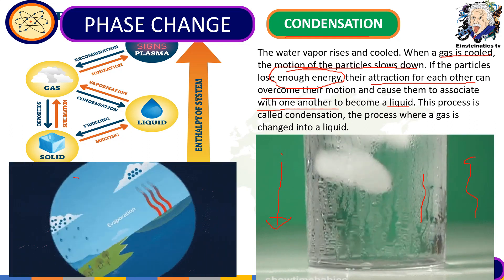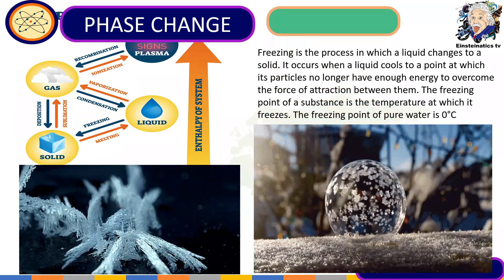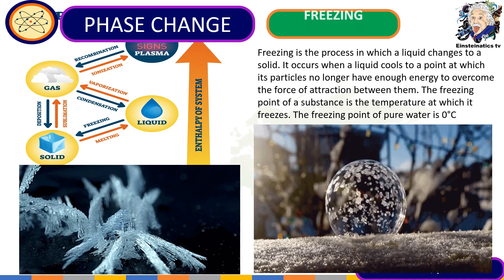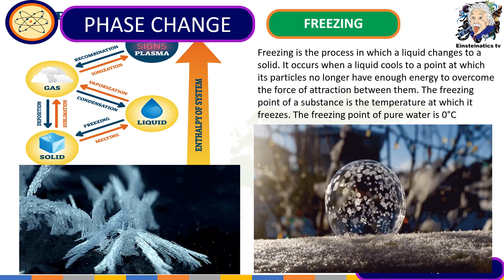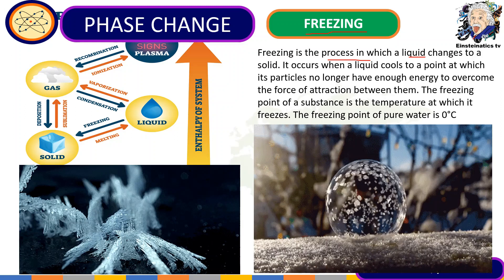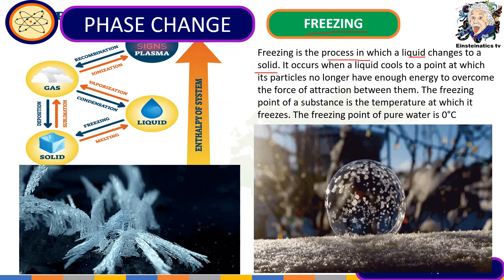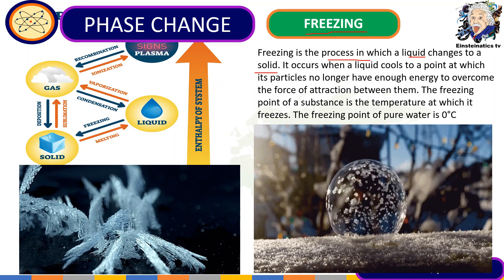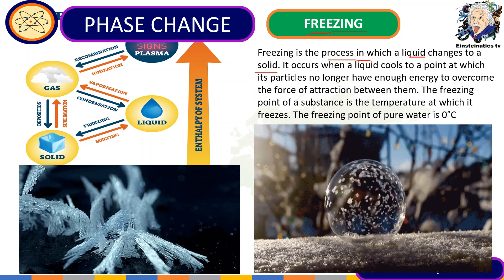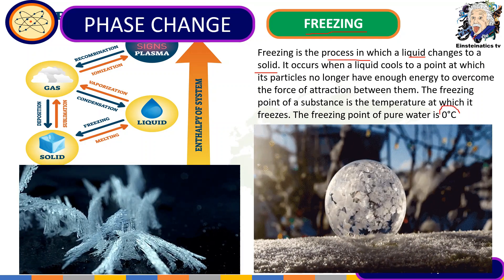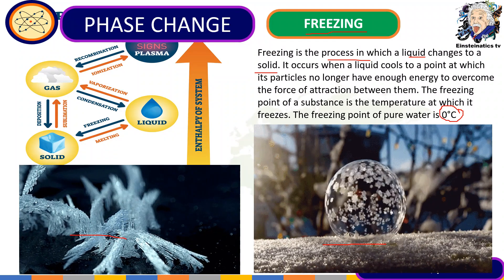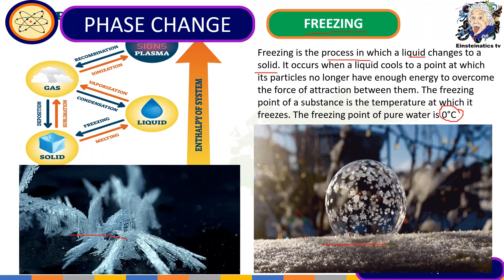Condensation is also the reason why we have rain. The next physical change is freezing — the process where liquid changes into a solid. It occurs when a liquid cools to a point at which its particles no longer have enough energy to overcome the force of attraction between them. The freezing point of pure water is zero degrees Celsius, illustrated by snow and ice — liquid water turning into solid water.